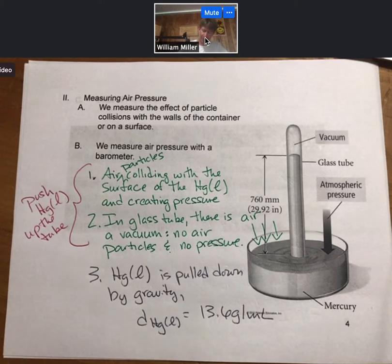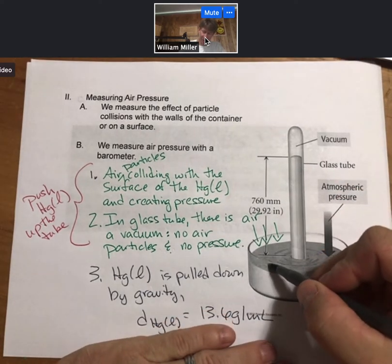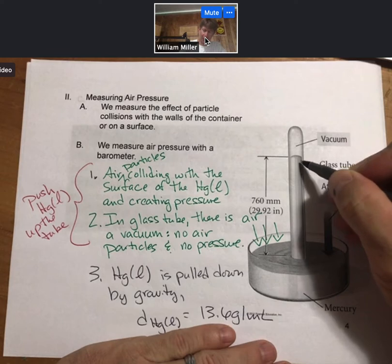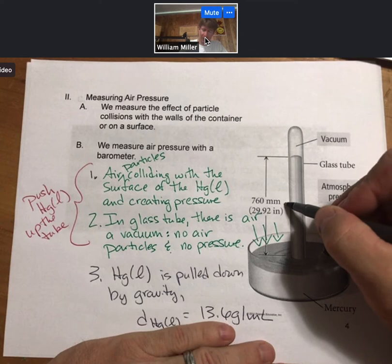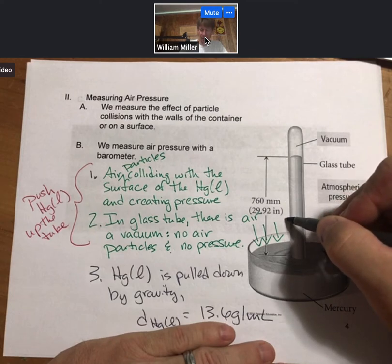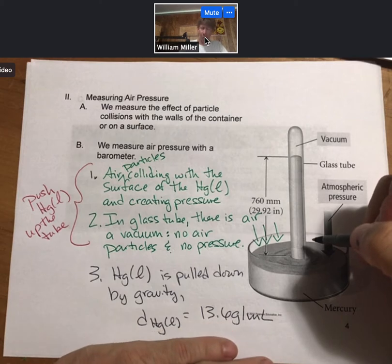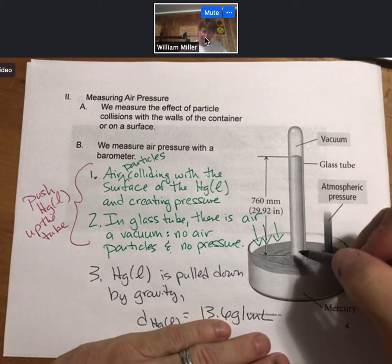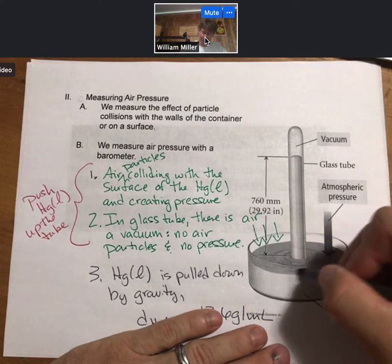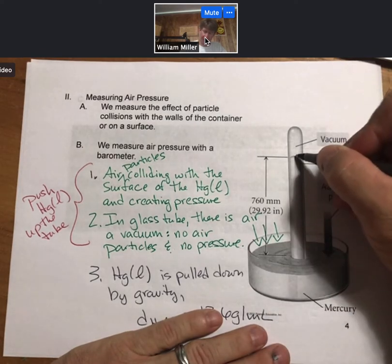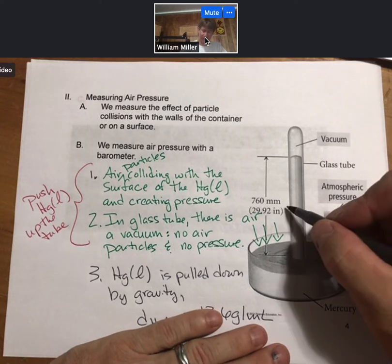But even so, the air pressure is able to push the mercury up the tube and against gravity for 760 millimeters or 29.92 inches. That's quite high. So a mercury barometer actually is a pressure or force balance between pressure on the outside pushing it up, then gravity pulling it down.